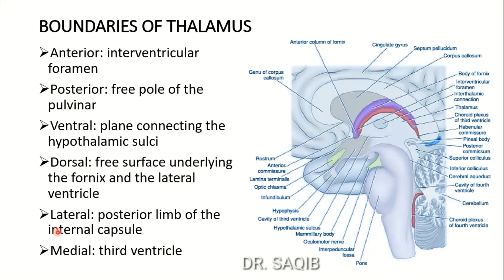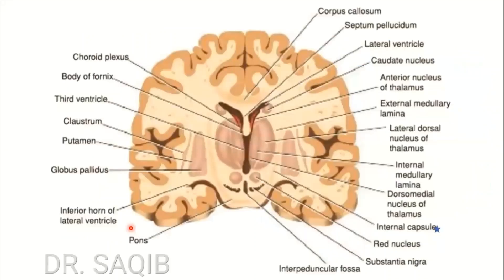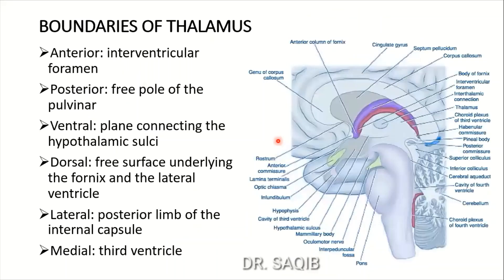Laterally, the boundary of the thalamus is the posterior limb of the internal capsule. This is the thalamus and here is the internal capsule lying laterally. The thalamus has the internal capsule on this side. And medially is the third ventricle. In this section, lying medially is the third ventricle.